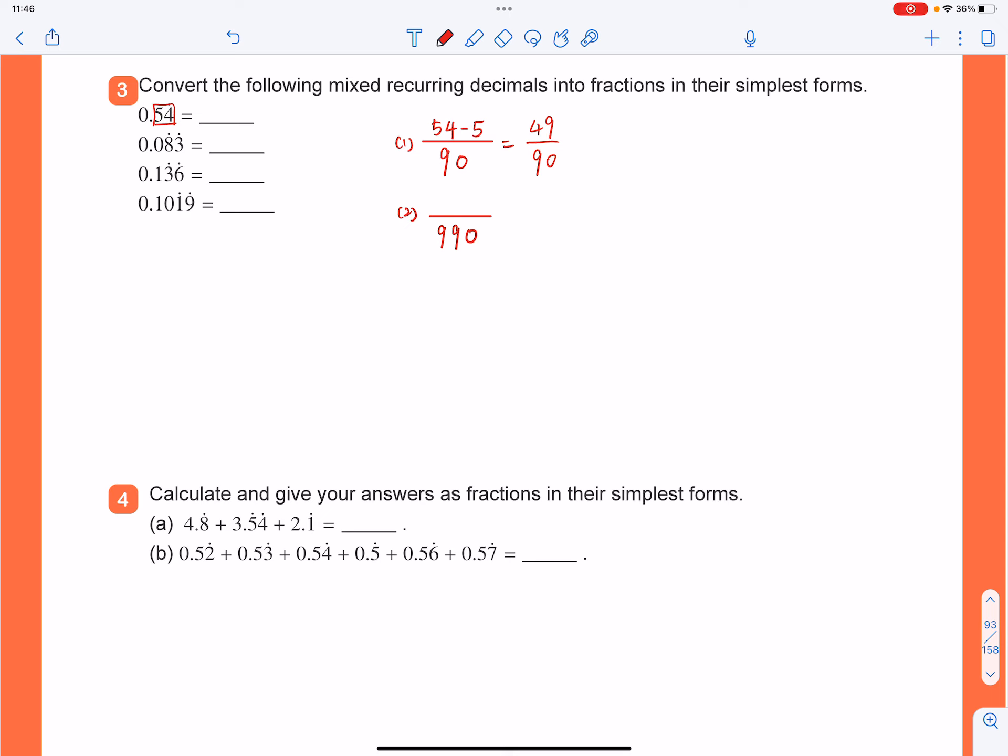As for the numerator, you have to use all the digits after the decimal point. That is 0.083, so basically that is 83. And then take away the non-recurring part. The non-recurring part is just the 0, so you have to take away that 0. So the answer to the second question will be 83 over 990.